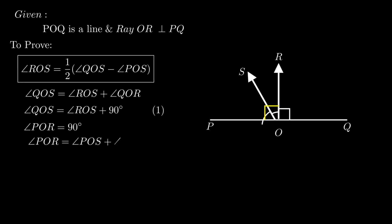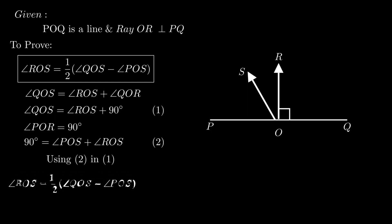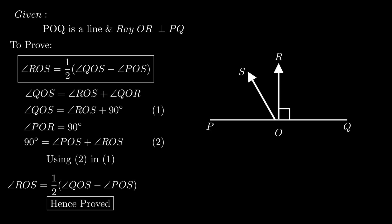From the figure, angle POR is the sum of angle POS and angle ROS. As angle POR equals 90 degrees, this equation becomes 90 equals the sum of angle POS and angle ROS. Putting the value of 90 as angle POS plus angle ROS in equation number 1, we get angle QOS equals the sum of angle ROS, angle POS, and angle ROS. On simplification, angle QOS minus angle POS equals twice of angle ROS. On transposing, angle ROS equals half of angle QOS minus angle POS. Hence the problem is proved.